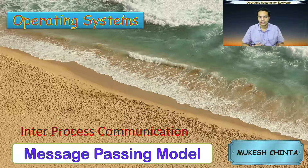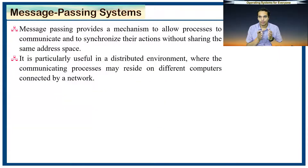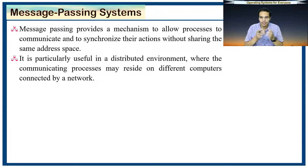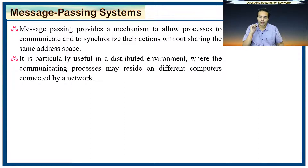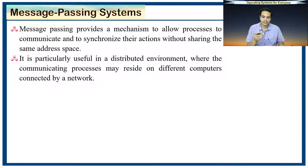As I explained in the last video, if we want to implement two cooperating processes without them having to share the same address location, then the other way of implementing it is message passing. Processes need to synchronize or communicate without sharing the same address space. This is particularly useful in a distributed environment.